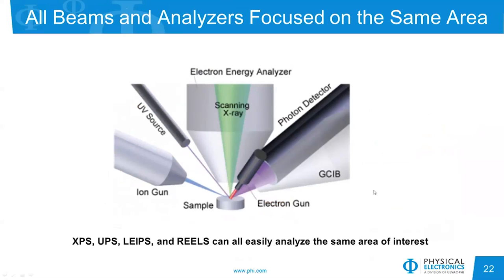The final diagram simply shows having a combination of XPS, UPS, LIPS, and REELS all on the same Versaprobe 3 setup, all looking at the exact same area on the sample surface, along with any sputter guns on the sample. So you can very easily do combined experiments with these different techniques, all in the same area of interest. And with that, we'll end. Thank you very much.